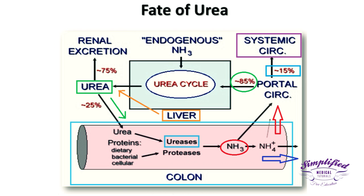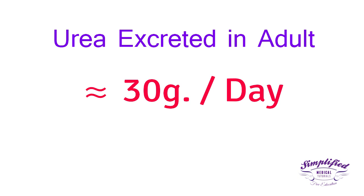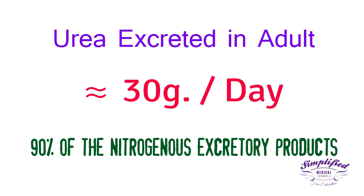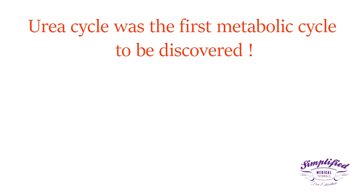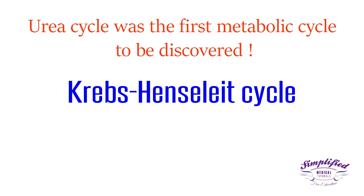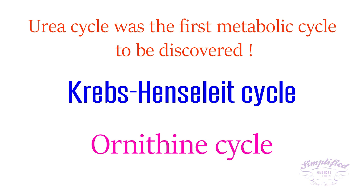The majority of reabsorbed ammonia returns to the liver where it is detoxified back to urea, while a small portion enters the systemic circulation. The urea excreted each day by a healthy adult is about 30 grams and accounts for about 90 percent of the nitrogenous excretory products. Notably, the urea cycle was the first metabolic cycle to be discovered — it is known as the Krebs-Henseleit cycle. Since ornithine is the first member of the reaction sequence, it is also called the ornithine cycle.